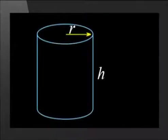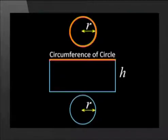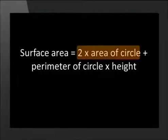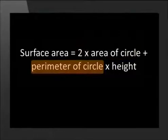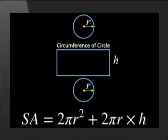With a cylinder, it is important to remember that it has 3 faces: 2 identical circle faces and 1 rectangle face. The circumference of the circle forms the length of the rectangle face and the width is the height of the cylinder. So, applying the general formula for the area of the right prism, the surface area will be 2 times the area of the circle plus the circumference of the circle times the height of the prism, or 2πr² plus 2πr times h.